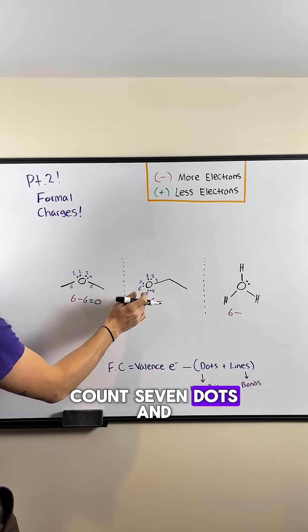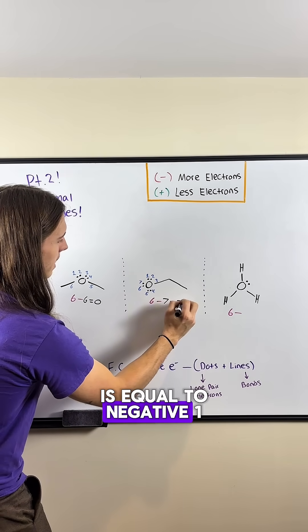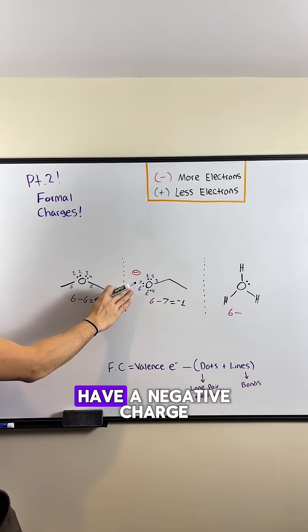In this one, we count seven dots and lines around oxygen, so six minus seven is equal to negative one, which means oxygen will have a negative charge.